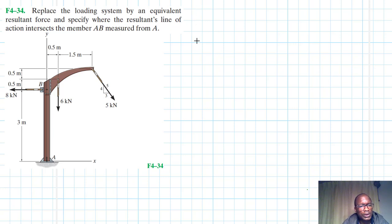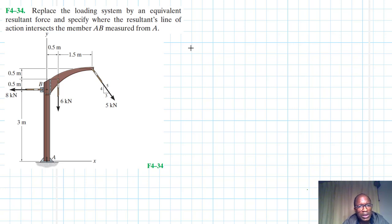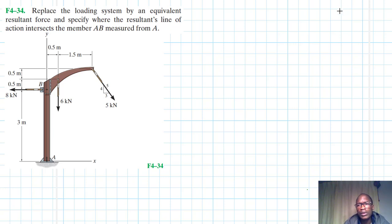Hello, I welcome you all to this another interesting screencast. The problem reads: replace the loading system by an equivalent resultant force and specify where the resultant's line of action intersects the beam AB measured from A. This problem is coming from Engineering Mechanics and Statics, 13th edition by Hibbeler.